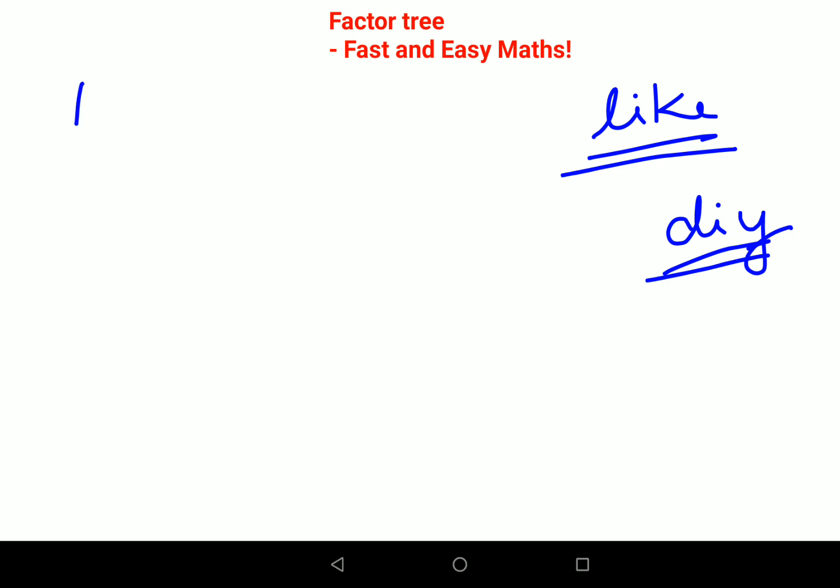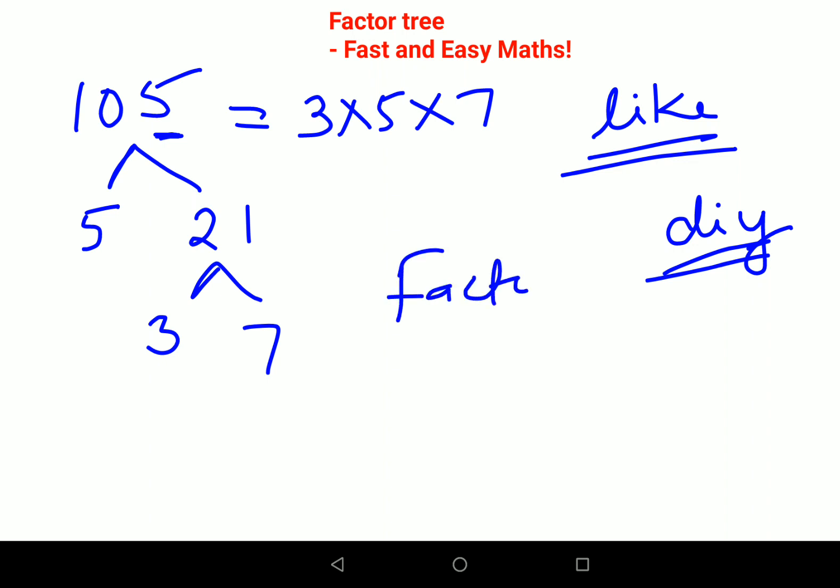So now here we have 105. Now here again, you can do it with 3 as well, but since the last digit is 5 and dividing any number by 5 is super easy, let's do it with 5. So 5 and you get 21, so this becomes 3 and 7. So finally the prime factors for this one is 3 into 5 into 7.